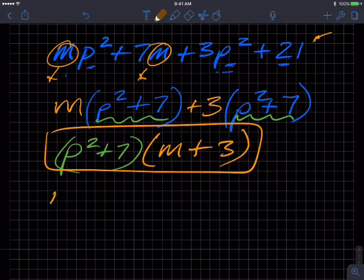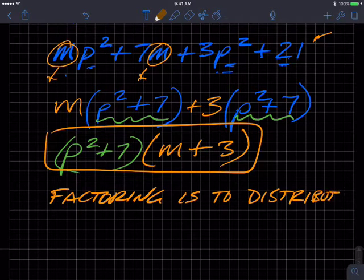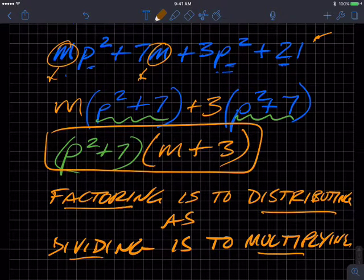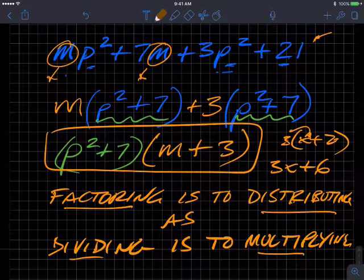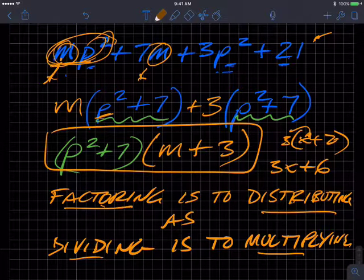And so just a final note. Factoring is to distribution or distributing as dividing is to multiplying. So you know distribution or distributing is 3 times x plus 2. That's 3 times x plus 3 times 2. And that's multiplication. Factoring is division. Notice how when I removed or factored this m from that term, I divided this term by m and was left with the p squared. So factoring is to distributing as dividing is to multiplication. That's the analogy. All right? That's it.